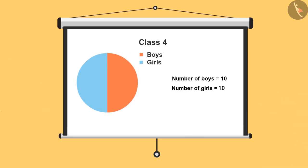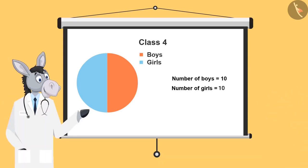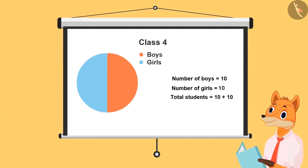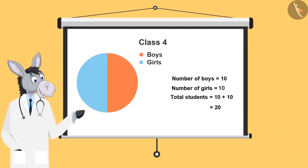10. So what is the total number of students in the class? 10 and 10 is 20. Very good.